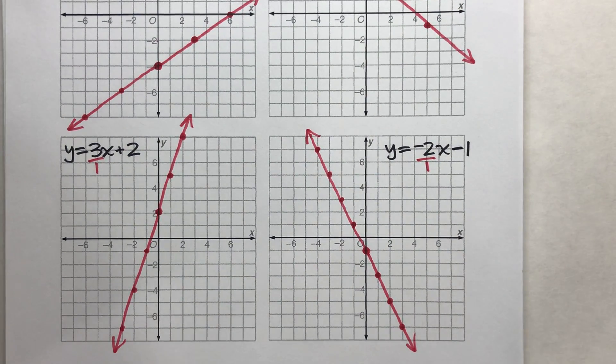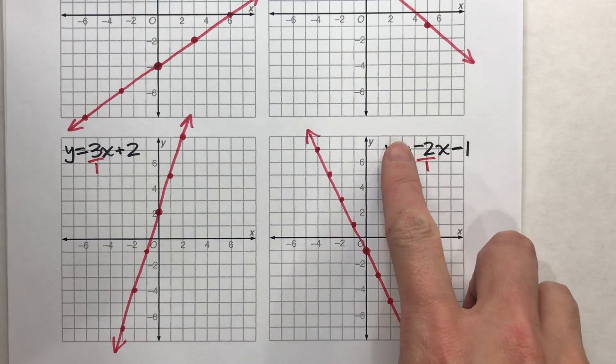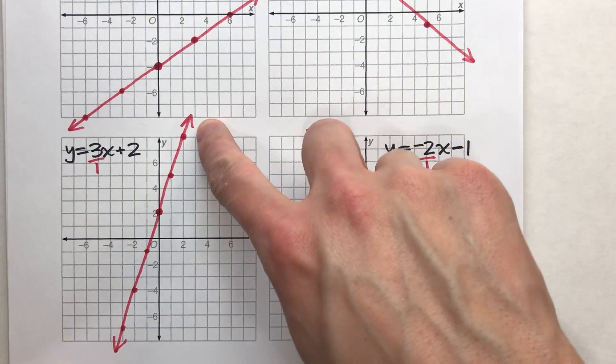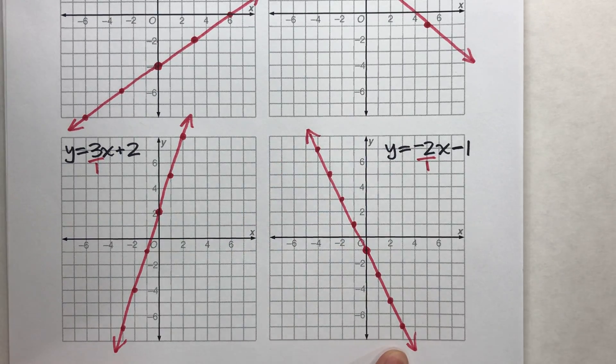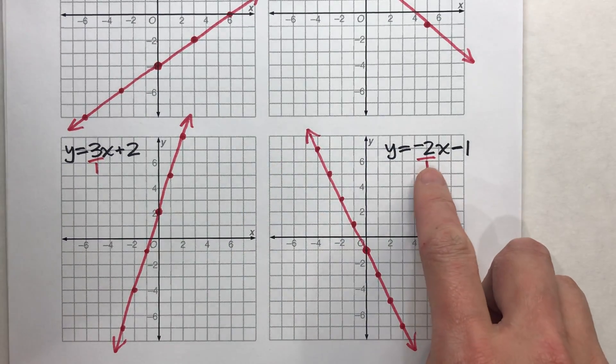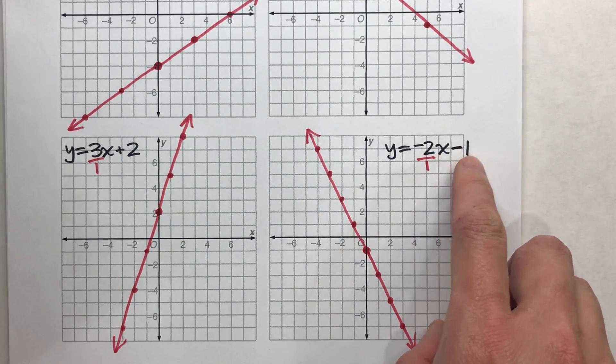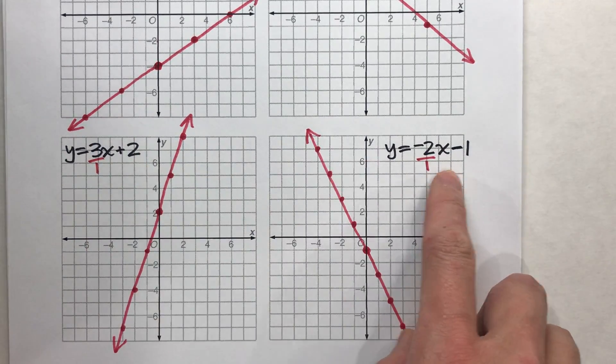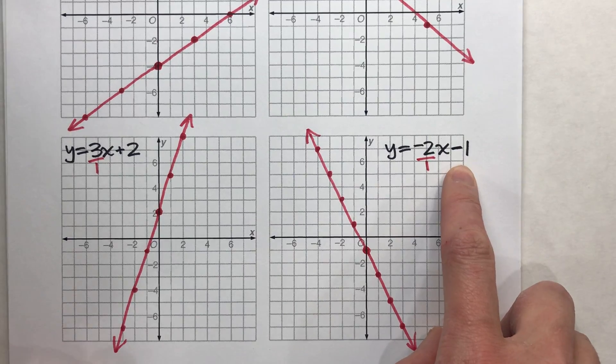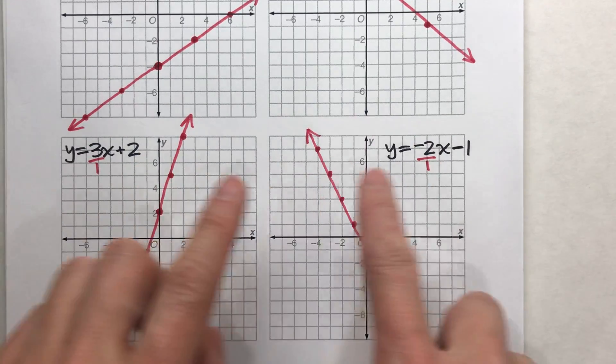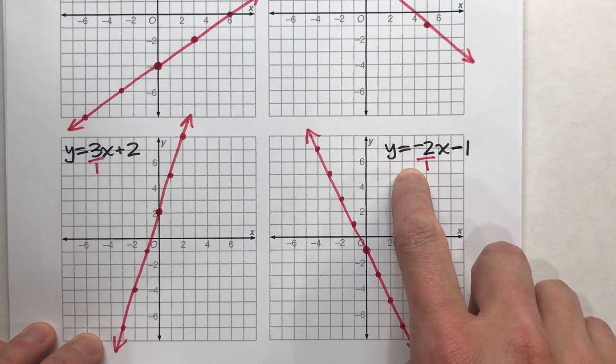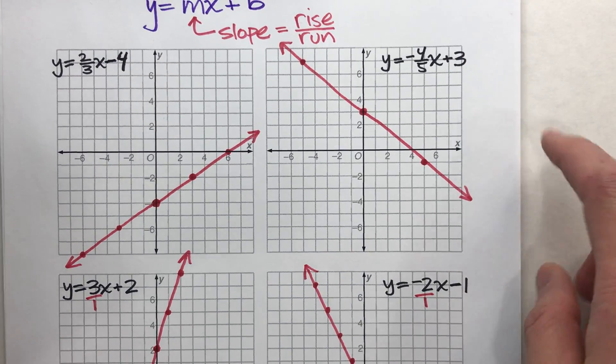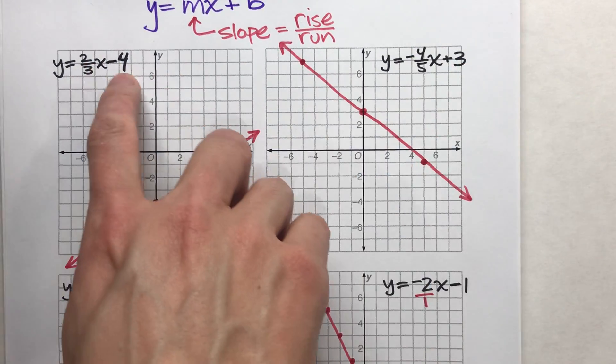So when you're graphing these, pay careful attention to whether the slope's positive or negative. Because it will change whether it's going up and to the right or down and to the right. And then also, remember, the y-intercept is the number that doesn't have the x next to it. Now, in these examples, that y-intercept is always on the far end of the equation. But just know that it doesn't have to be. It could be mixed up. They could put the y-intercept before the slope. And you'll know it's the y-intercept because it's the one number that doesn't have the x next to it.